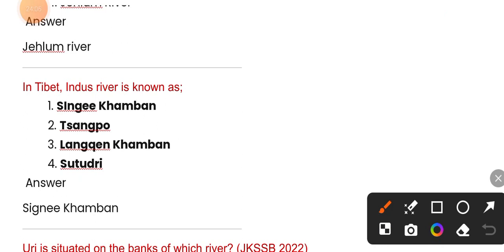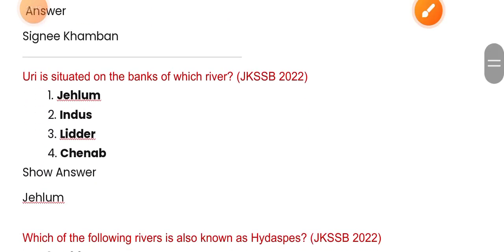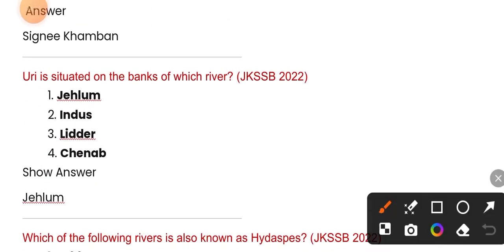The Indus river originates in Tibet. On the banks of which river is Shingni and Khambam located — option one. Uri is situated on the banks of the Jhelum river.